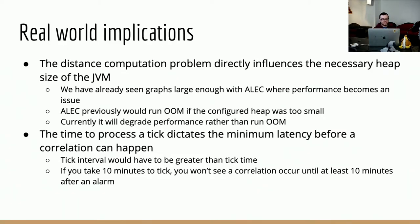The second problem is that a correlation tick can take a very long time to process if the graph is large enough, and that leads to larger latency between the time a fault originates and the time it can be correlated to other faults and added to a situation. If that time is long enough, the user experience is impacted — you don't want to wait minutes from when a fault is generated to when it's correlated into the situation.